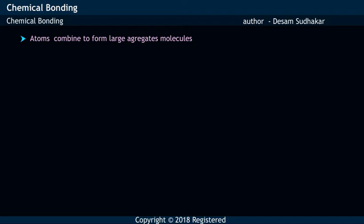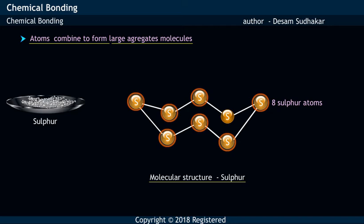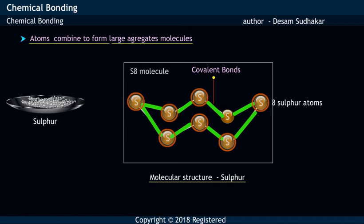Atoms combine to form large aggregates in case of solid sulfur, wherein eight sulfur atoms are bonded to each other thereby forming S8 molecule, which has a crown shape.